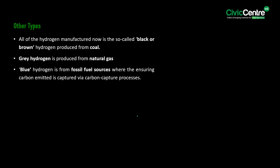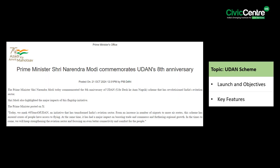However, all of the hydrogen manufactured now is so-called black or brown hydrogen, produced from coal. Furthermore, grey hydrogen is produced from natural gas, while blue hydrogen is produced from fossil fuel sources where carbon emitted is captured via carbon capture processes.